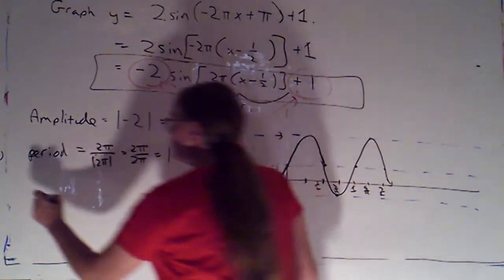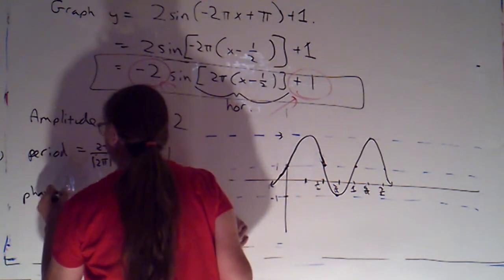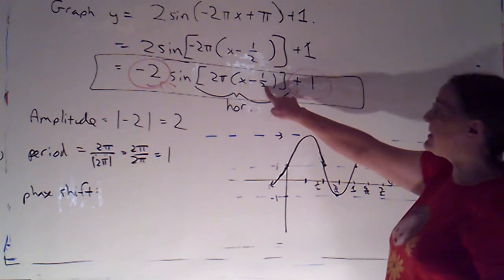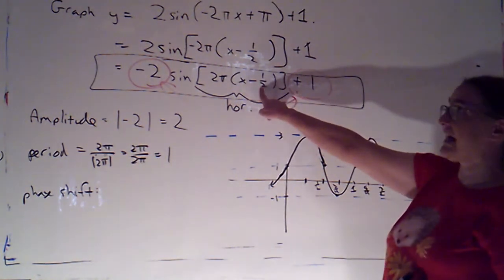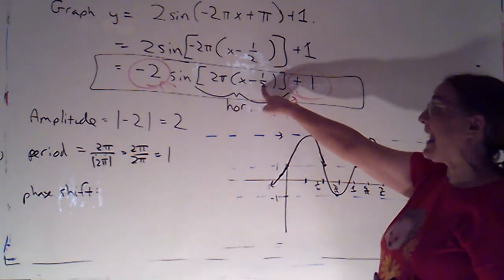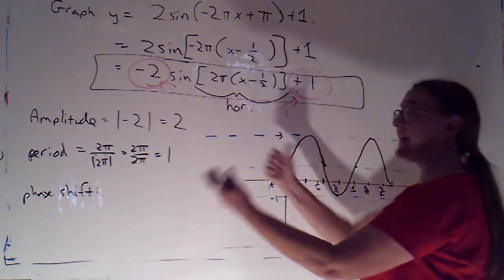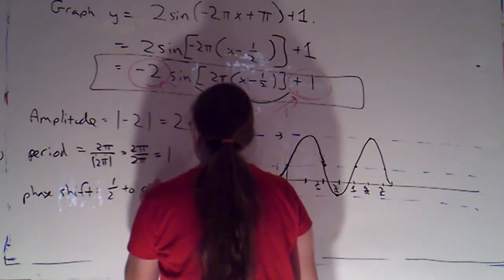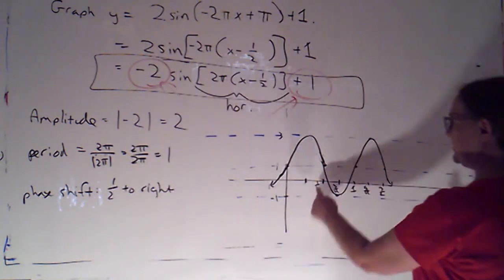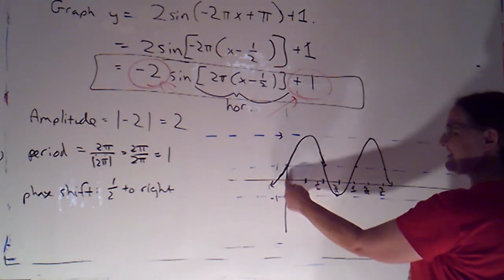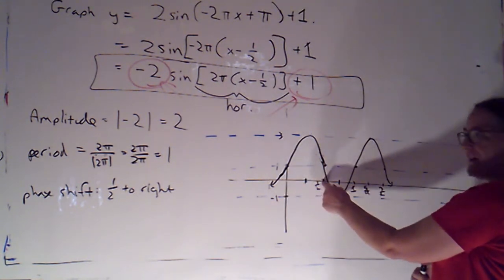Now, the phase shift. Because I put this in factored form, I can see that from this form directly. The phase shift, we went 1/2. And since we were subtracting that, it was 1/2 to the right. Now, if I take a look, yep, that was our starting point at 1/2. Instead of starting at an x value of 0, we started at an x value of 1/2.